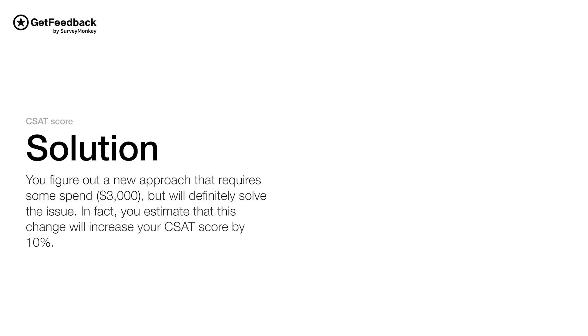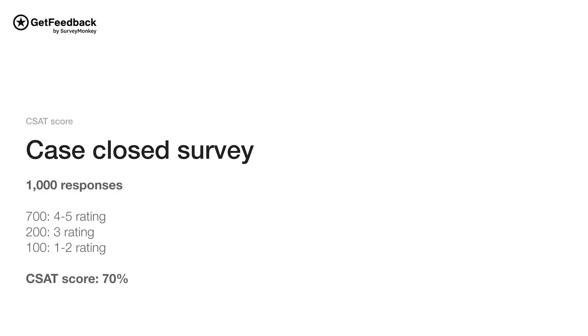So you implement the change, and after some time, you send out a new batch of the case closed CSAT survey, getting the same amount of responses. And voila — your 1 to 2 rating decreased to 100, your scorings of 3 remained the same, but your 4 to 5 scores increased to 700. Now you have a CSAT score of 70%.